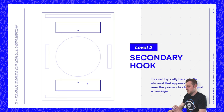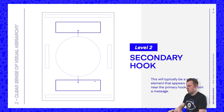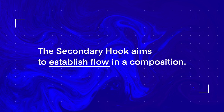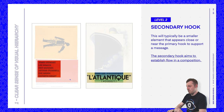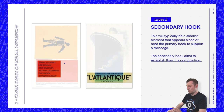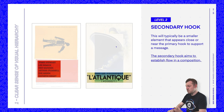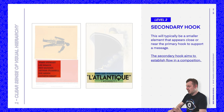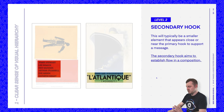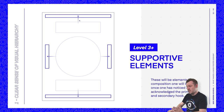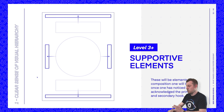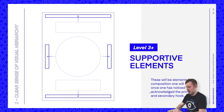The next level is the secondary hook. This will typically be a smaller element that appears close or near to the primary hook to support a message, aiming to establish flow in a composition. In the first example, it's the names of the actors starring in the movie that we are drawn to after the primary hook, as these are slightly smaller. In the next example, once we see the huge ship, we are drawn down to read the header. The levels after are supportive elements — in any given design, there may be few or many.